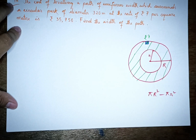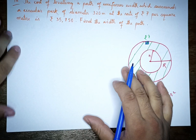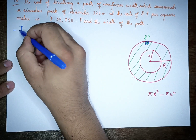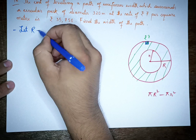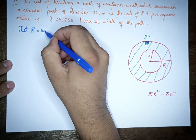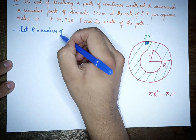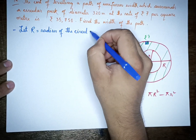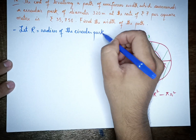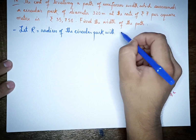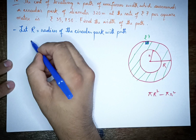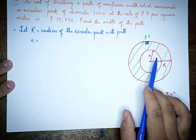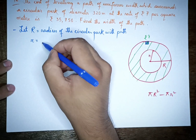Where the outer circle has radius R — let capital R be the radius of the circular park including the path, and small letter r be the radius of the inner circular park.